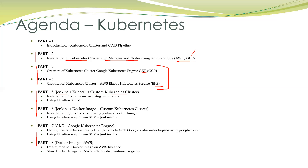In part six, we will use the Jenkins Docker image and again deploy to the custom Kubernetes cluster from part two. The difference between part five and part six is that in part six we use the Jenkins Docker image instead of installing Jenkins via command line. I will show how we can use the Kubernetes cloud services plugin. We will use the pipeline script from SCM and use a Jenkinsfile for deploying the CI/CD pipeline.